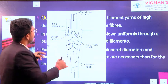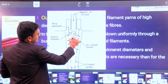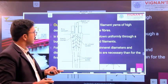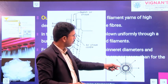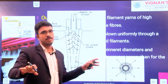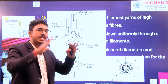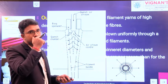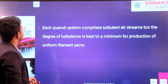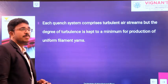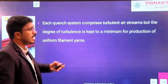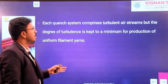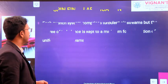In case of outflow quench, from inside to outside we are passing the cool air. In case of inflow quench, from outside to inside the air is blown. In case of cross flow, the cool air is passed against the filaments. Whatever quenching system is used, it is comprised of turbulent air streams, but the degree of turbulence is kept to a minimum for the production of uniform filament yarns.